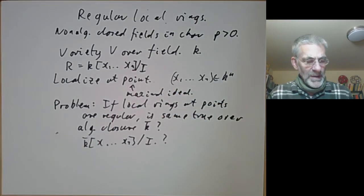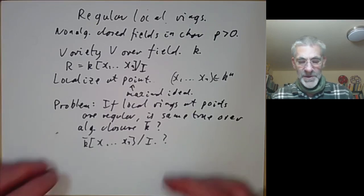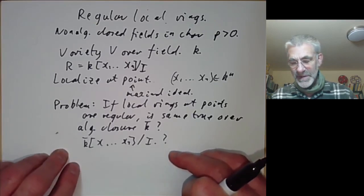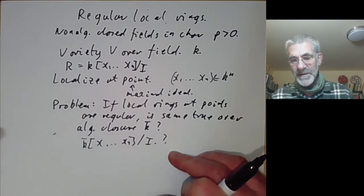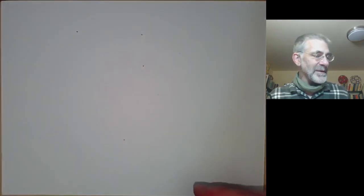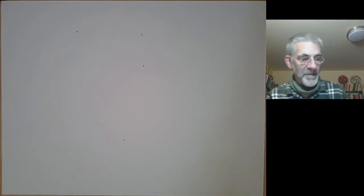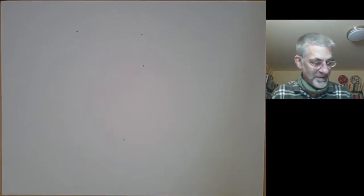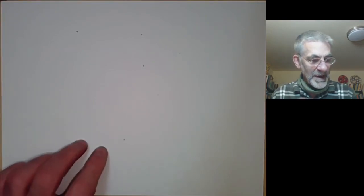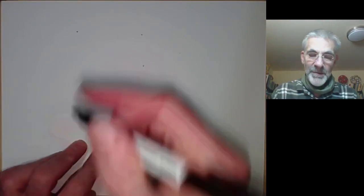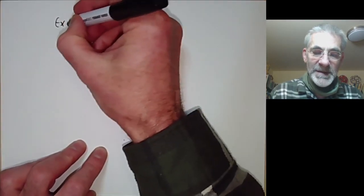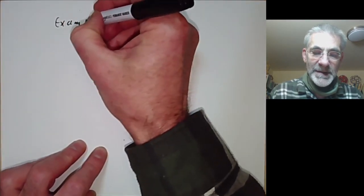In characteristic p this isn't actually true, and this was discovered by Zariski. When Zariski came up with this example everybody got a little bit confused by it at first. An example might be something like this.